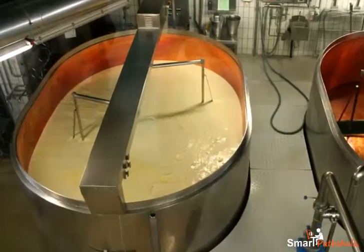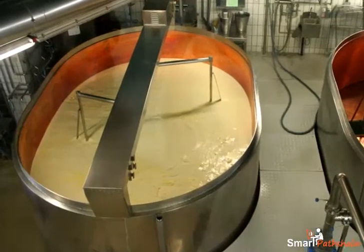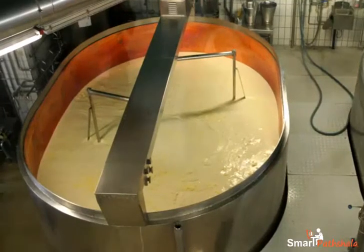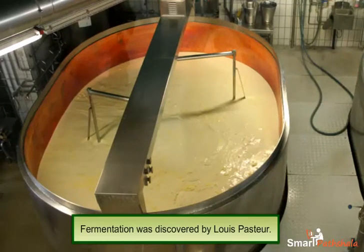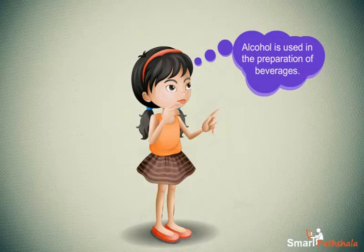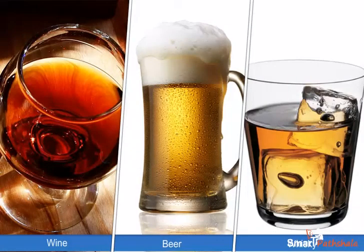Fermentation takes place in large tanks which are called fermenters. Fermentation was discovered by Louis Pasteur. The alcohol produced in fermentation is used in the preparation of beverages like wine, beer, whiskey, etc.